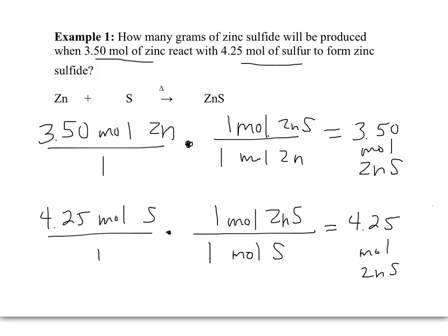In this case, it's going to be the zinc. Zinc produces 3.50 moles of zinc sulfide. We will never be able to make 4.25 moles of zinc sulfide because we will run out of zinc first.